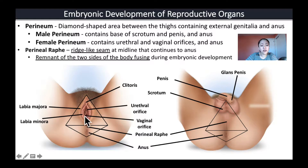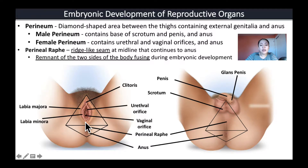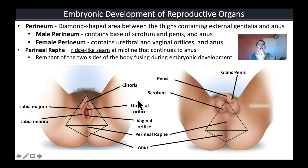Surrounding the vagina you also see the clitoris, as well as folds surrounding the vaginal orifice. The inner folds are called the labia minora and the outer fold is called the labia majora. In both male and female you also see a line that extends from the genitalia all the way back to the anus.